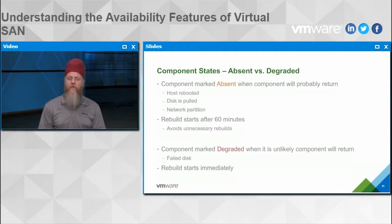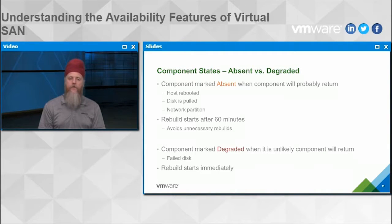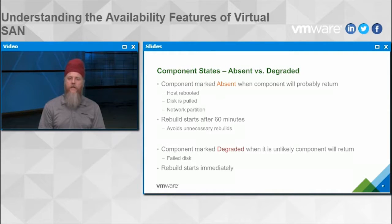If that 60-minute period passes, vSAN will rebuild that component on another available disk or disk group within the vSAN. The other component state is degraded, with the main example being a failed disk. vSAN monitors disk performance and latency, and if a disk has problems it marks the component as degraded and immediately starts a rebuild on another disk, since a failed disk is not expected to improve itself.